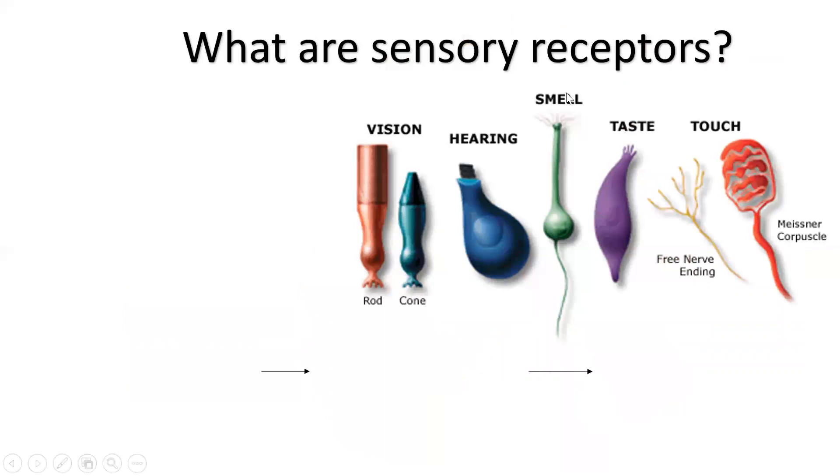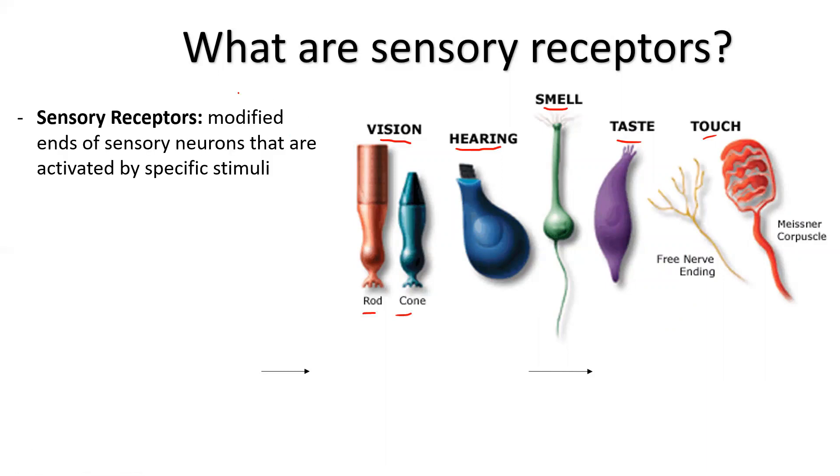So what are your sensory receptors? They're funny looking things. Rods and cones are for light, hearing, smell, taste, touch, Pacinian corpuscles, Meissner corpuscles, free nerve endings for pain, and so on and so forth. So sensory receptors are modified endings of sensory neurons.